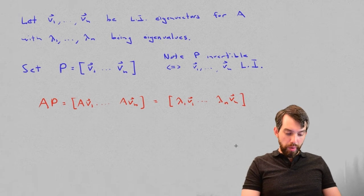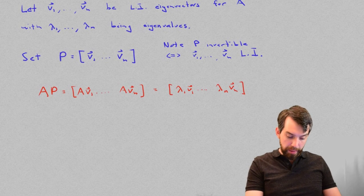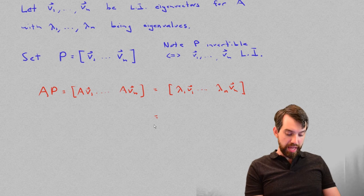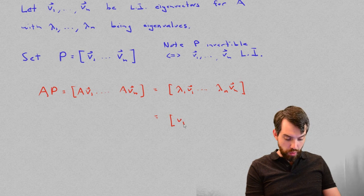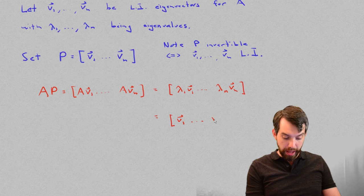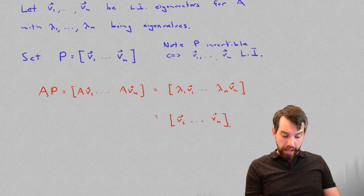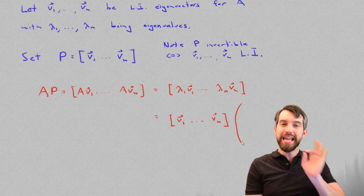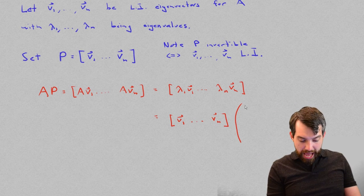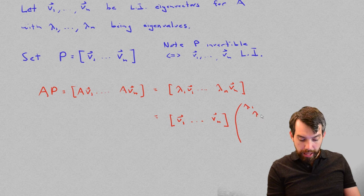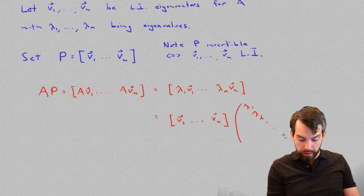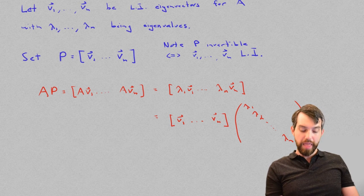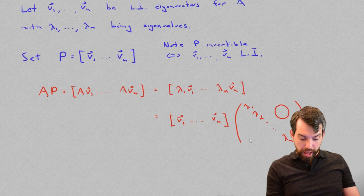Now, compare what we have here with the following. I claim that this is the same thing as taking that matrix, the v1 down to the vn, the P matrix, and multiplying it by something kind of special. A diagonal matrix that has the eigenvalues lambda 1, lambda 2, all the way down to lambda n along the main diagonal. And then has zeros everywhere else.